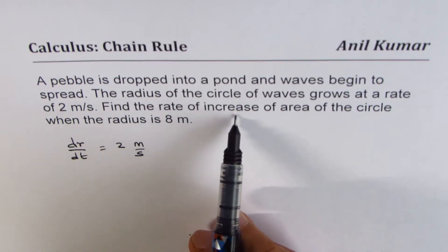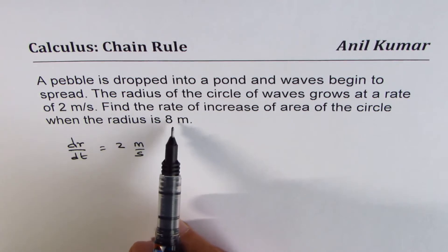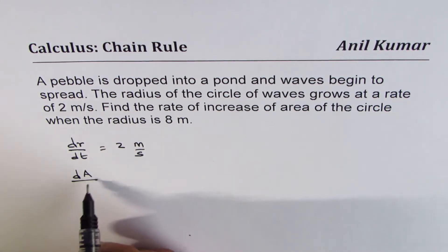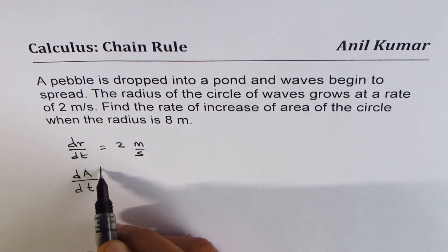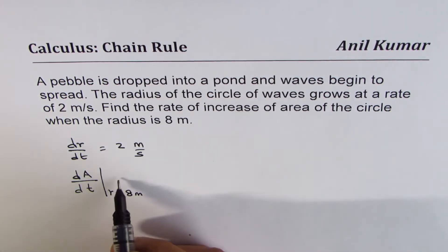Find the rate of increase of area of the circle when the radius is 8 meters. So we want to find rate of increase of area, that is with respect to time, when radius equals 8 meters. So that is what we need to find.